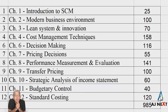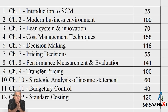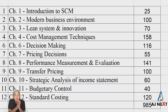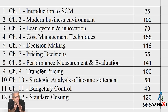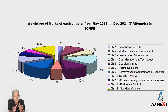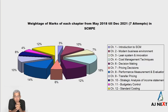This is a 120-mark paper, and 120 into 7 is 840, but there are many internal options as well. So across all seven attempts, questions have been asked for a total of 985 marks. I converted this into a percentage — that is what my discussion is all about today: which chapter you can leave and which you might not be able to leave.